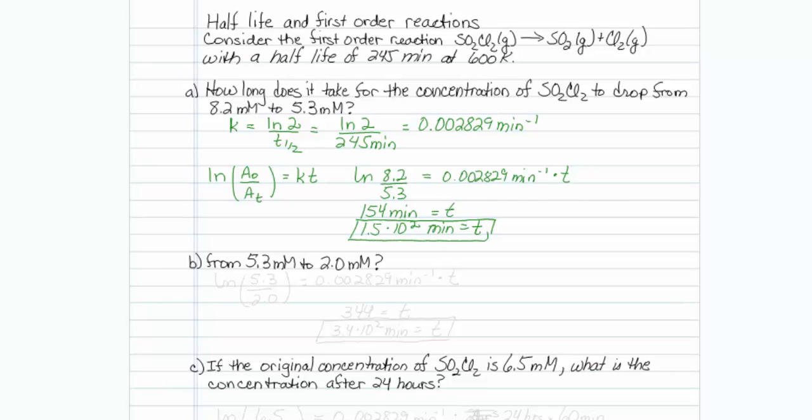Now that I've got that all-important rate constant, I can do part b very quickly. I'll use the same formula. Natural log of 5.3 divided by 2 is equal to 0.002829 minutes to the minus 1 times my time, and this time T is equal to 344 or 3.4 times 10 to the second power minutes.